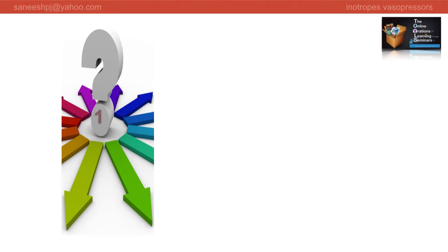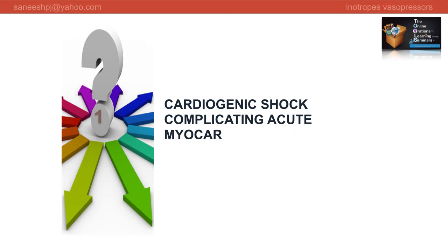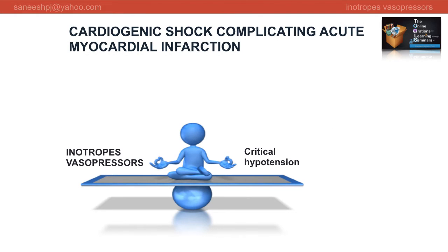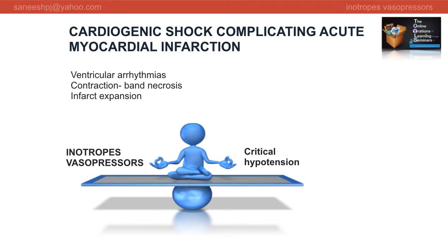Let us take a few clinical scenarios and see how we can decide on the choice of vasoactive agents. The first scenario is cardiogenic shock complicating acute myocardial infarction. Here we have to strike a balance between the risks and benefits of drug therapy with vasoactive agents. Inotropes or vasopressors may lead to ventricular arrhythmias, contraction band necrosis, or even infarct expansion.